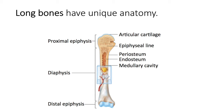Between the two epiphyses is the diaphysis — the shaft. All long bones have a shaft, and that's the portion between the two ends.